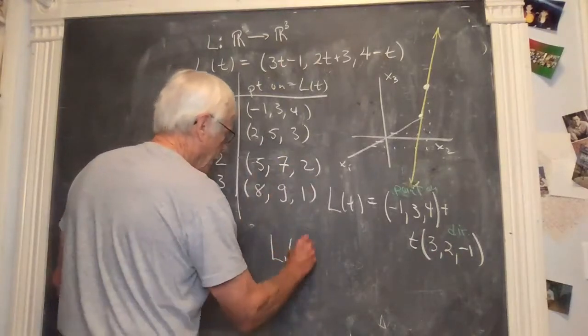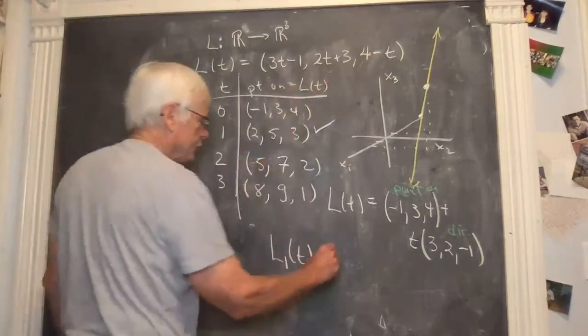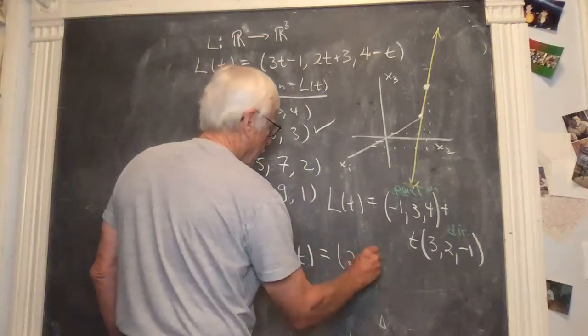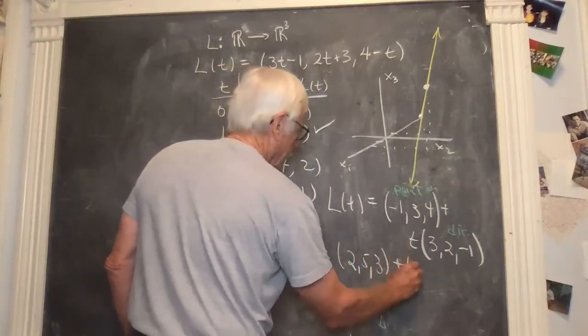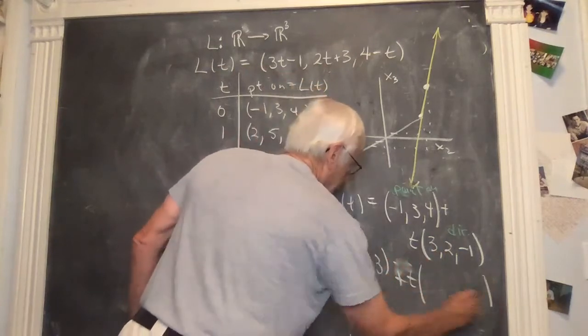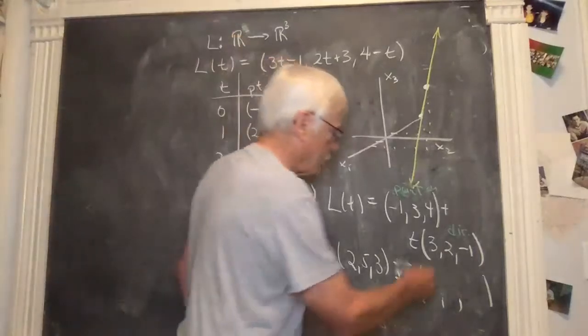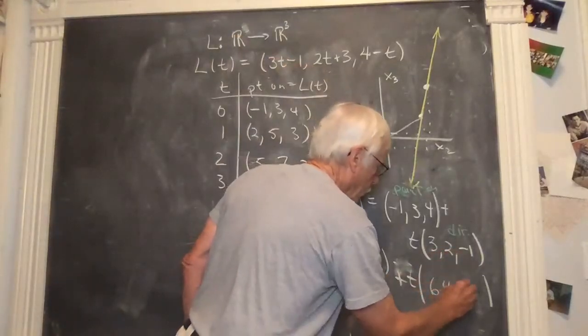So the next one, L of t, we make a selection of one of these. How about this? Two, five, three, plus t times. And now we'll pick a different but parallel direction. So I could double this, six, four, minus one.